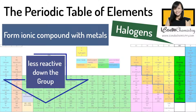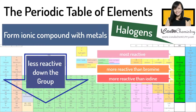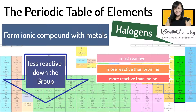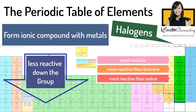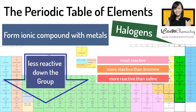The halogens become less reactive down the group. Fluorine is the most reactive non-metal in the periodic table. Chlorine is more reactive than bromine, and bromine is more reactive than iodine.